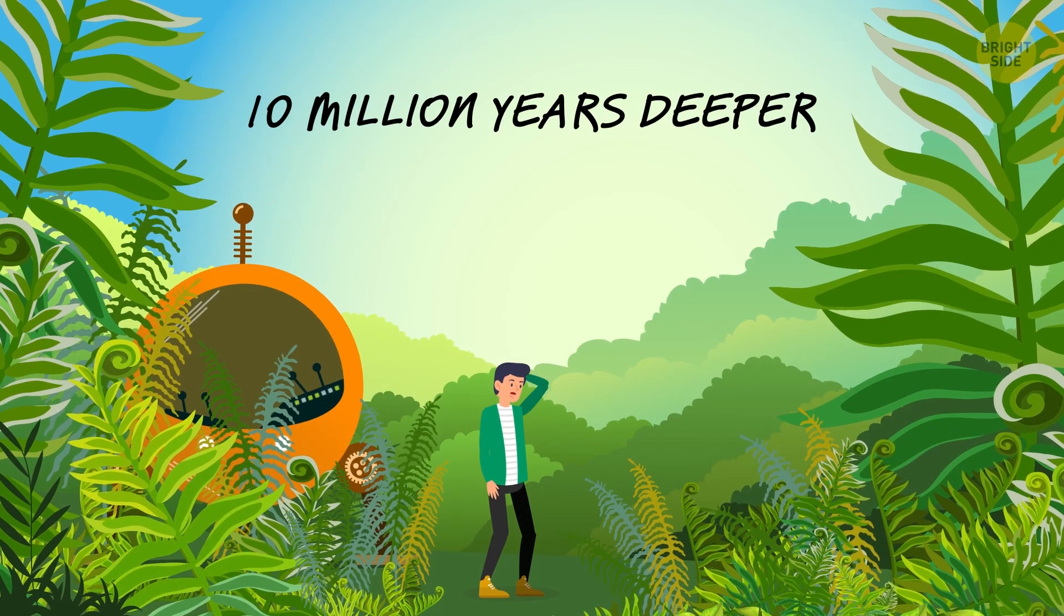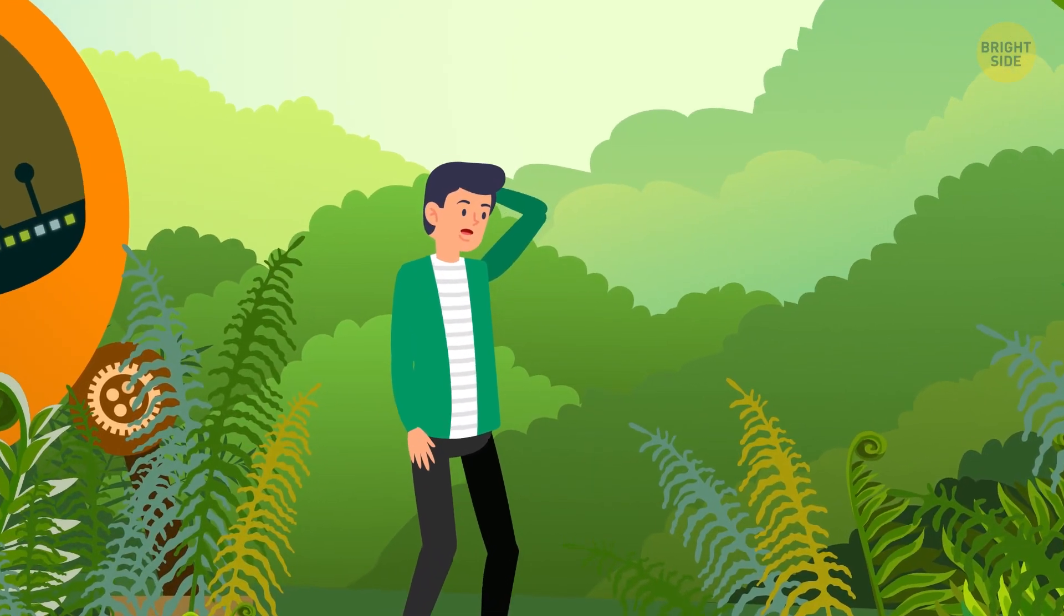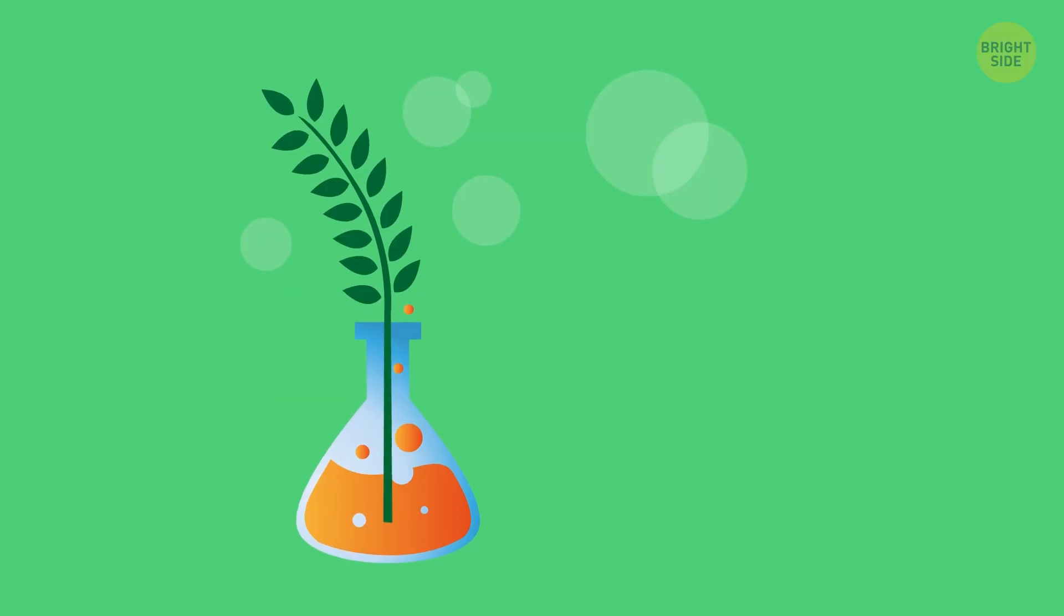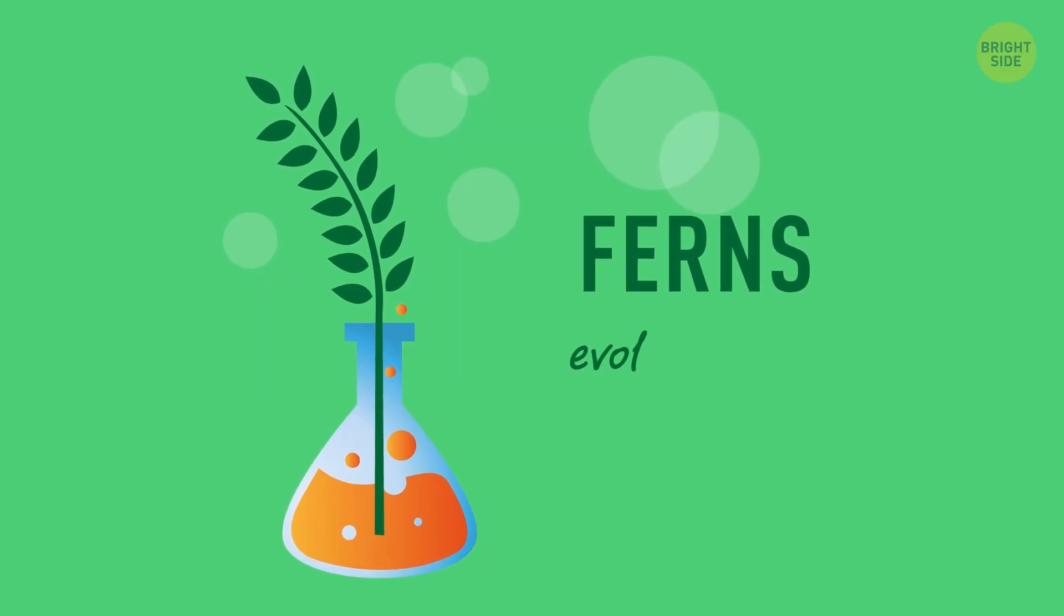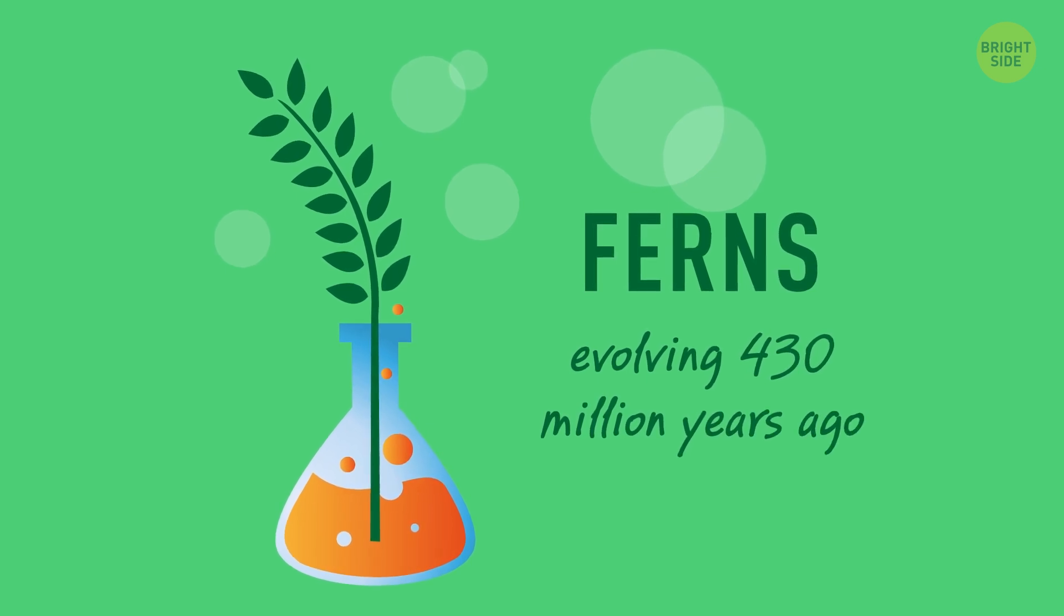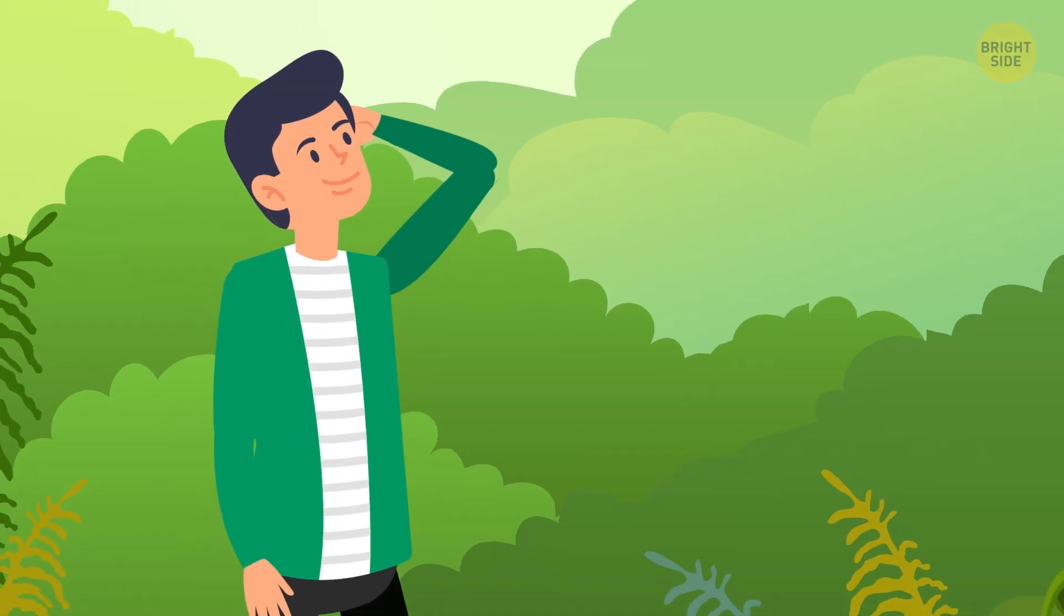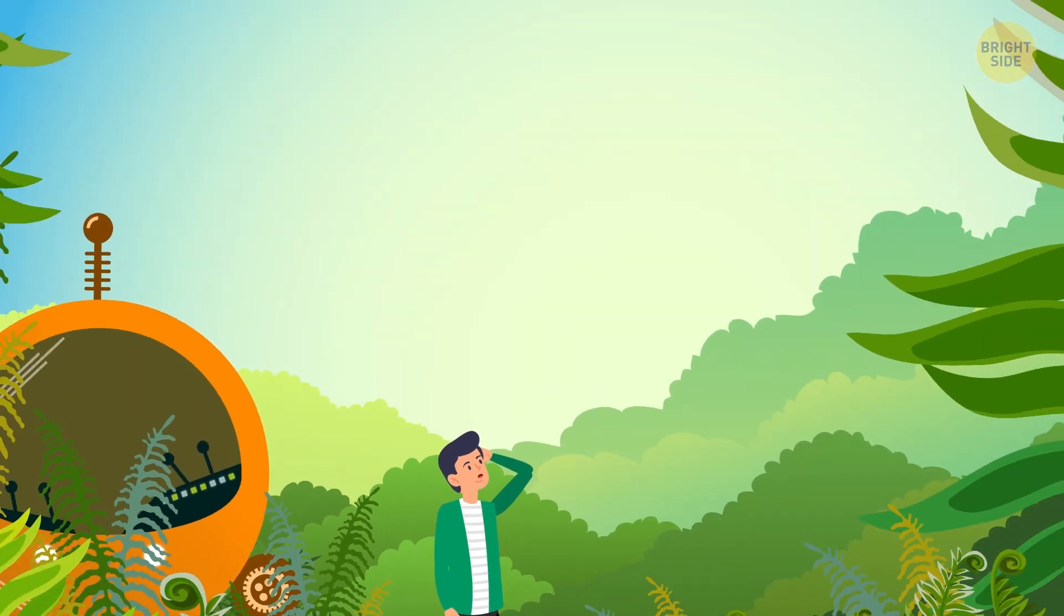Just another 10 million years deeper into the past, and Sam sees some of the earliest ferns. These plants are at least 380 million years old. But some scientists believe ferns might be much older, with the first of them evolving 430 million years ago. In any case, those have already gone extinct. By the way, the ancestors of some modern fern species grew the size of trees.